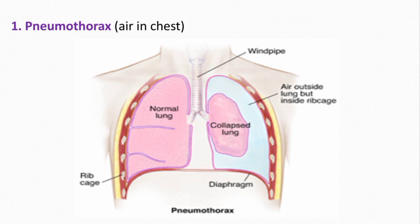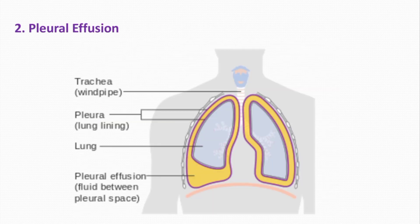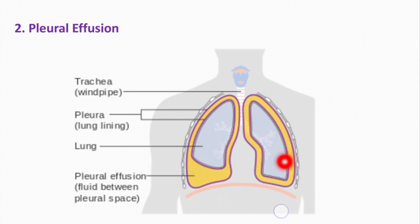The second abnormality of the pleural space is pleural effusion — the collection of large amounts of free fluid in the pleural space. As you can see here, the fluid has accumulated at the base of the right lung while the left lung appears quite normal. This fluid is similar to edema fluid, and pleural effusion can also be called edema of the pleural cavity.